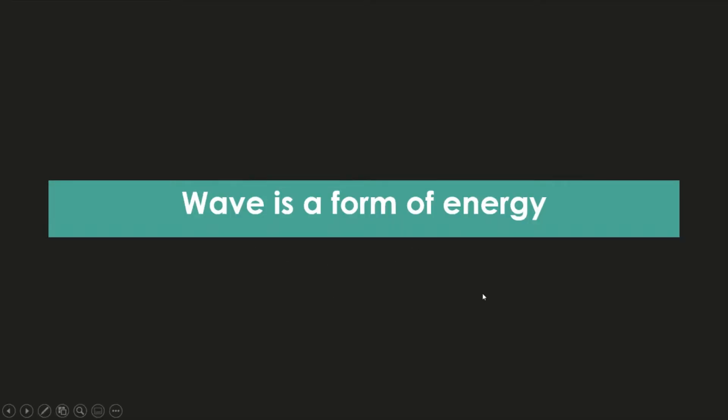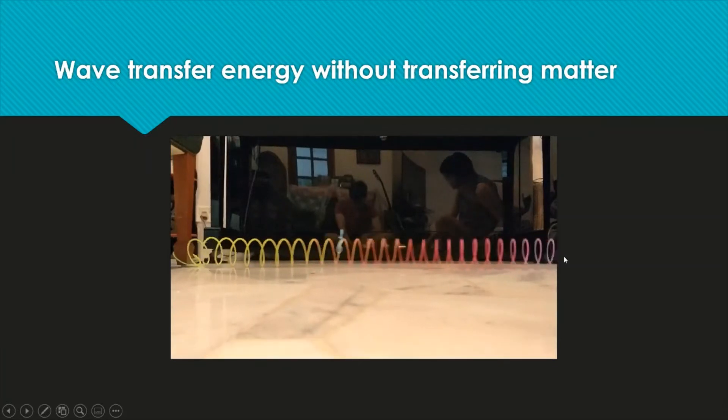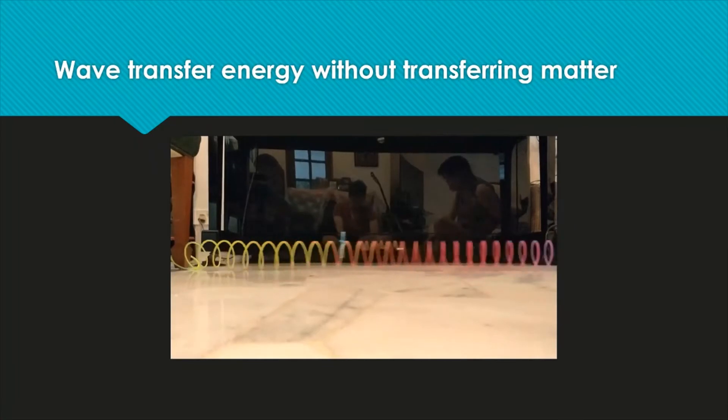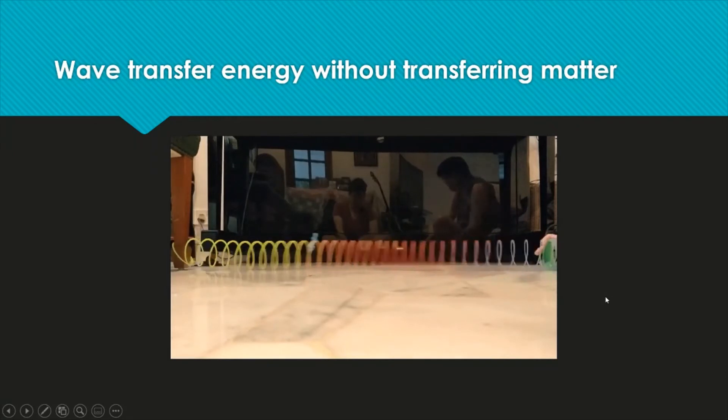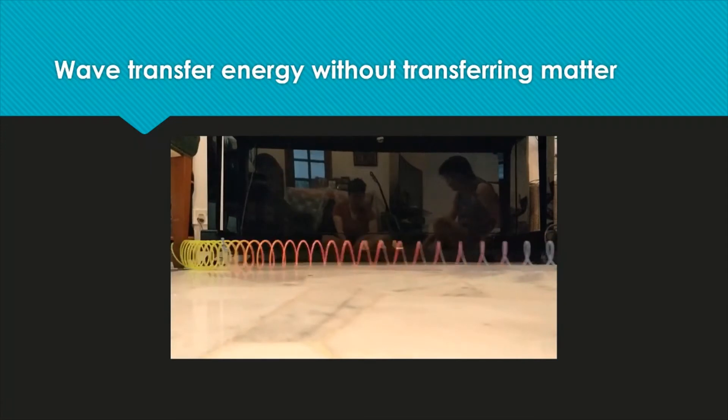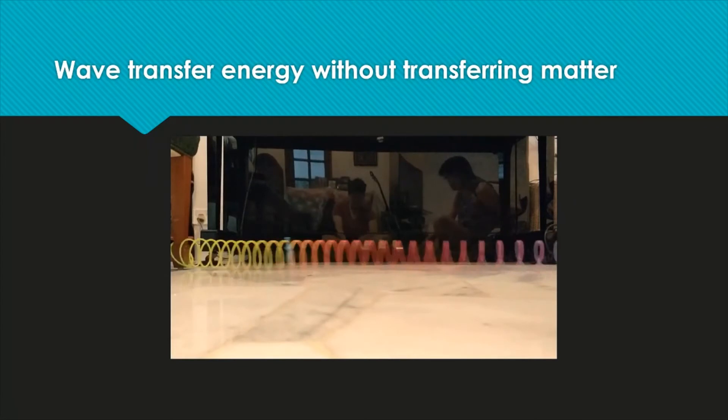So wave is a form of energy. How is this energy being transmitted? Look at the movement of the slinky. As the slinky moves, wave moves forward, from the red part of the slinky to the green part. Wave is a form of energy, so this wave transfers energy forward.